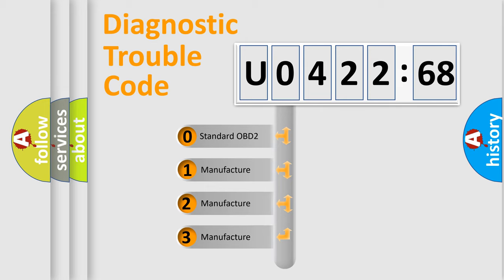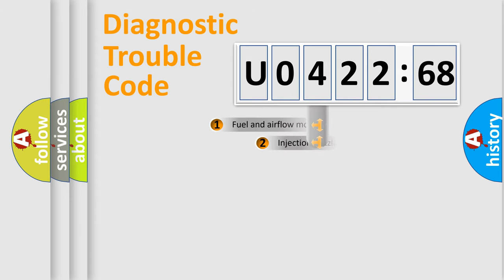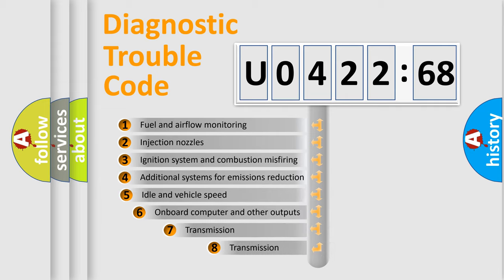If the second character is expressed as zero, it is a standardized error. In the case of numbers 1, 2, or 3, it is a manufacturer-specific expression of the car-specific error.